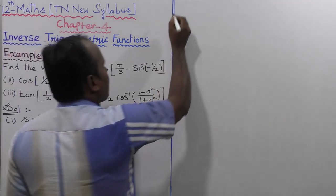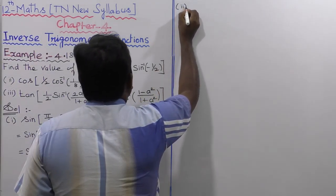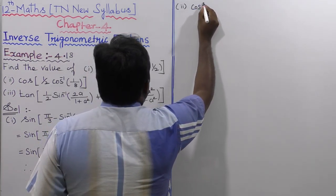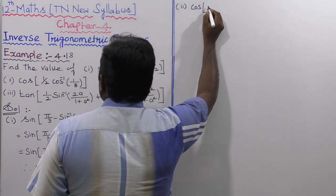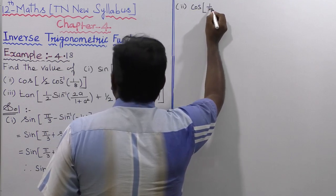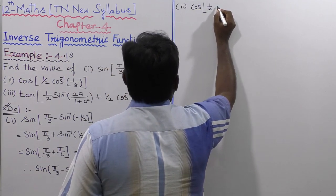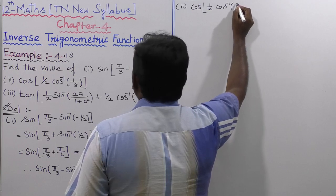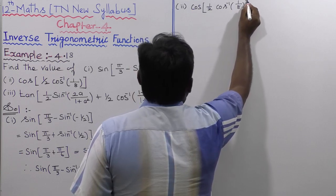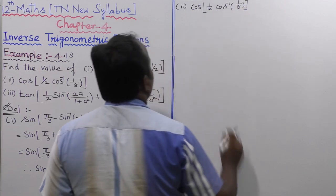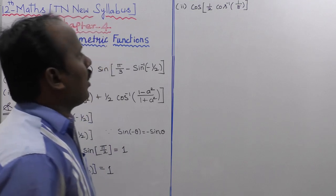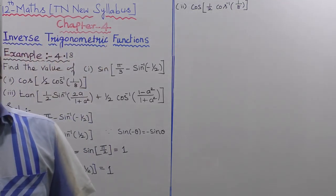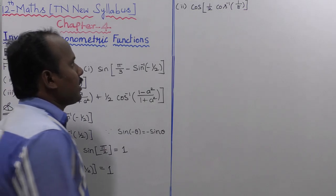Now moving to the second subdivision: find the value of cos(1/2 · cos⁻¹(1/8)).